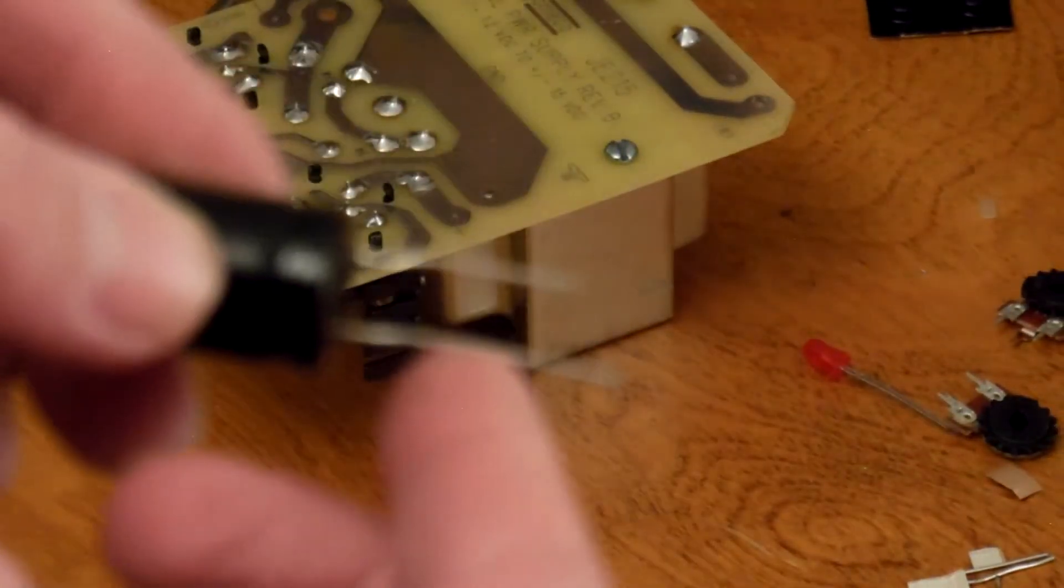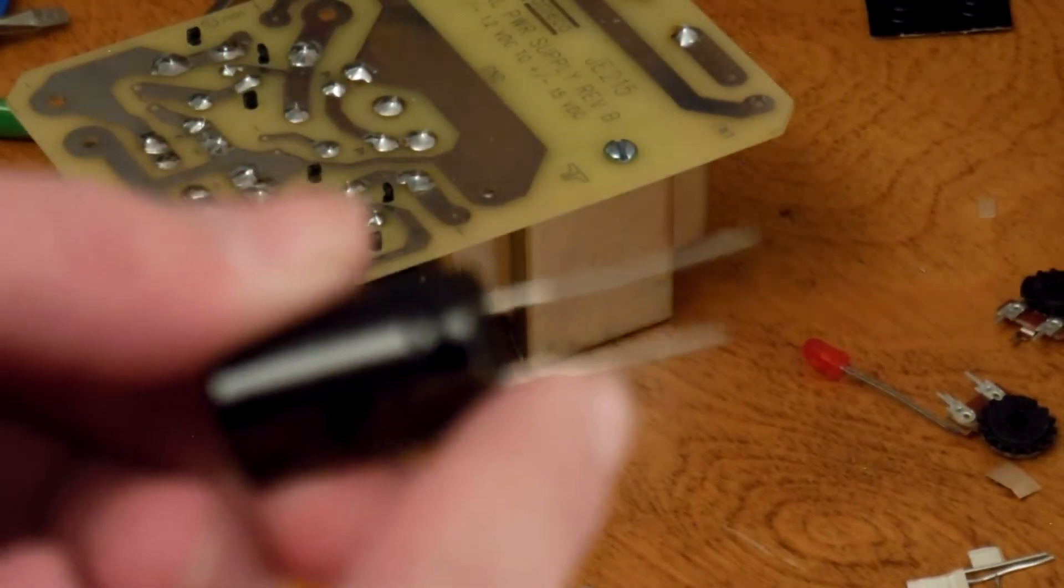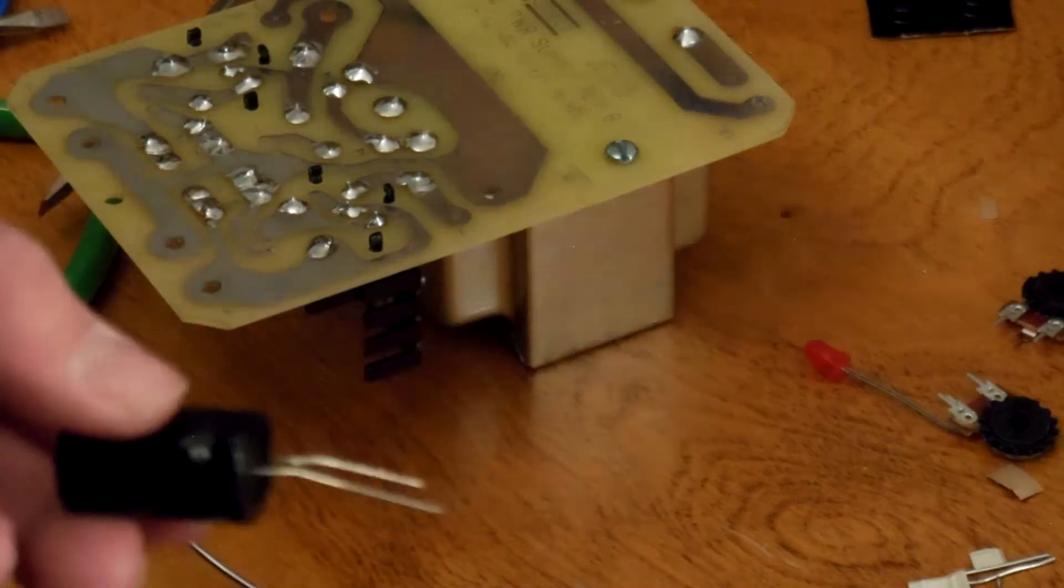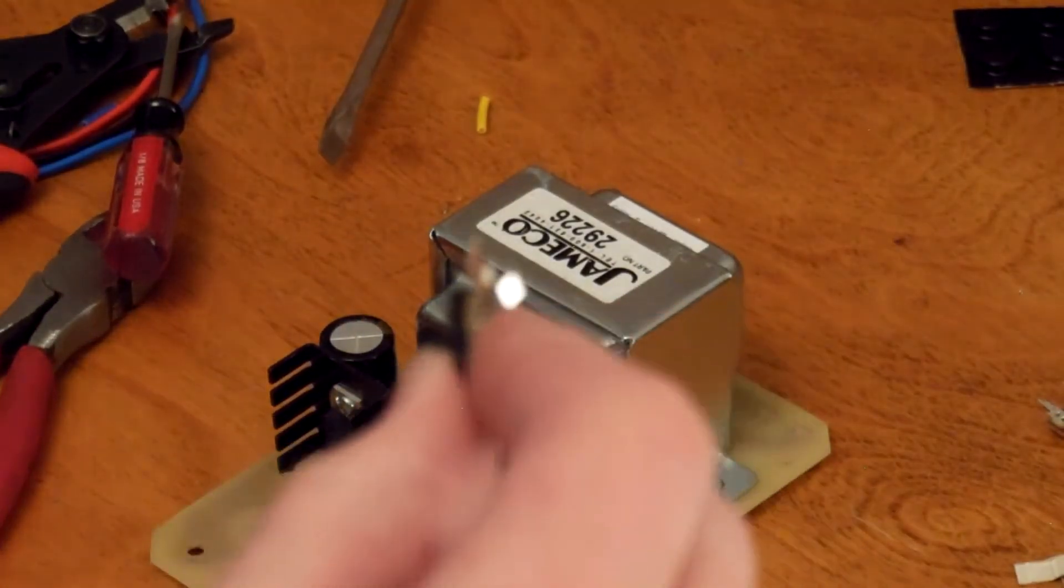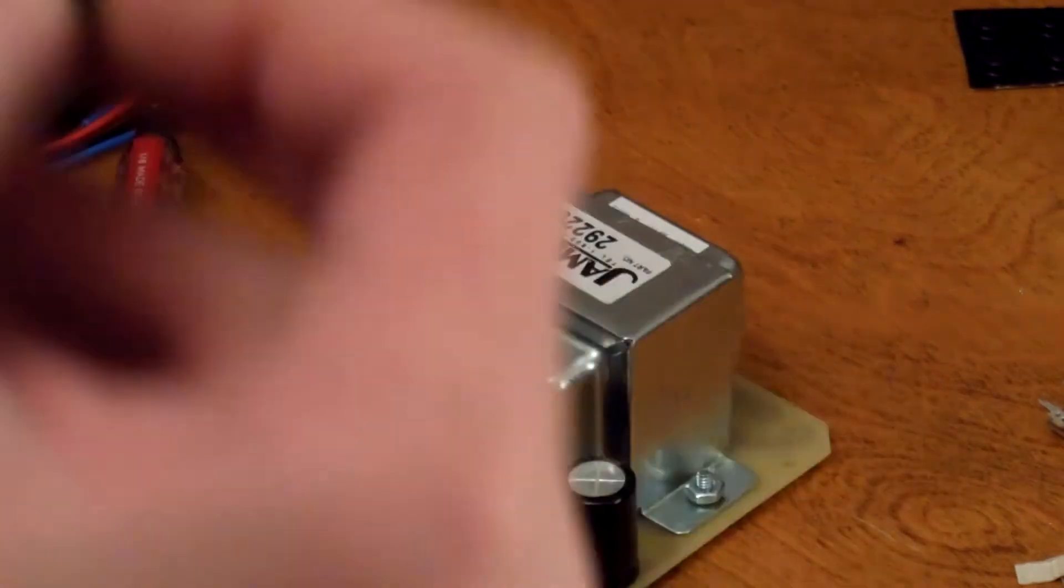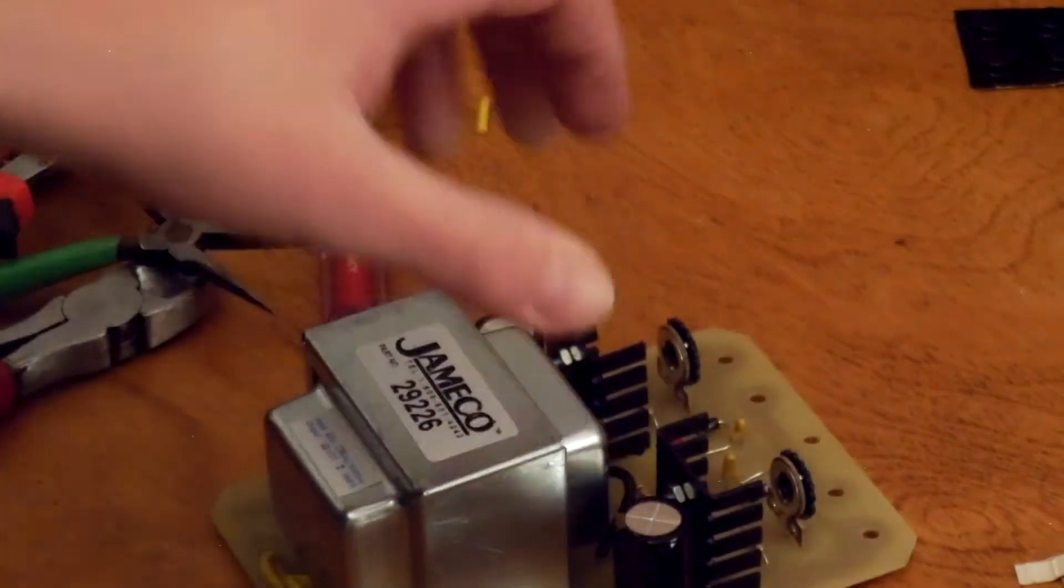So this, like the diodes and the other capacitors, have a long leg and a short leg. And the short leg is negative, long leg is positive. The potentiometers included have bent leads, so we're going to straighten them out. Once we get these potentiometers soldered in place, we're going to put the power cord on.